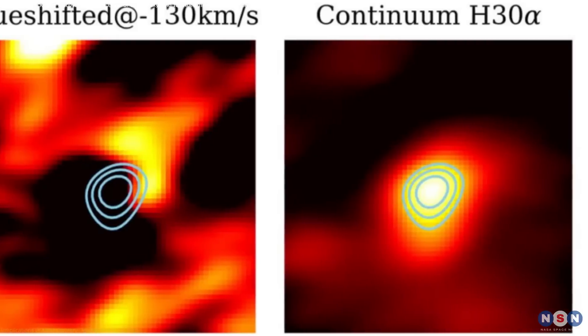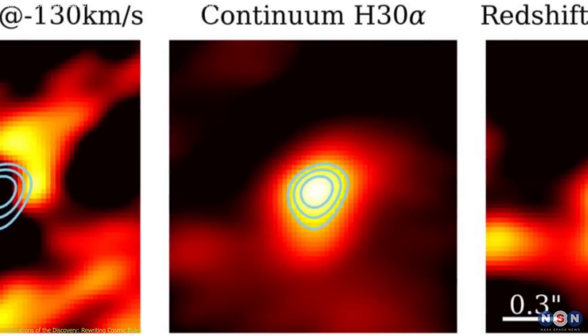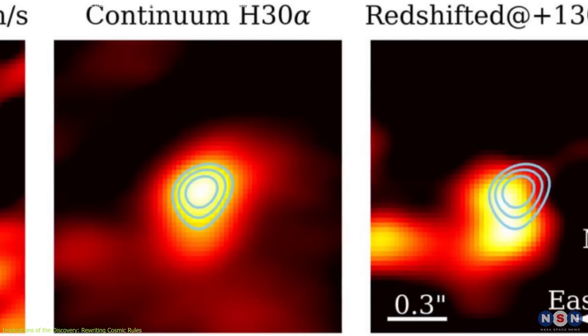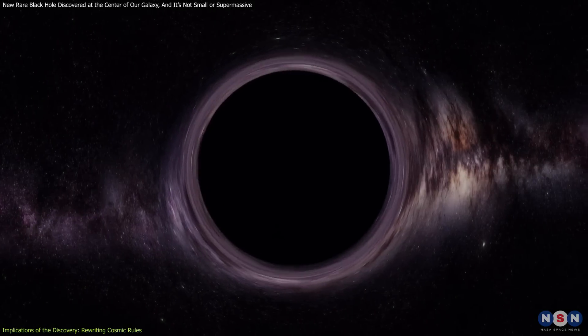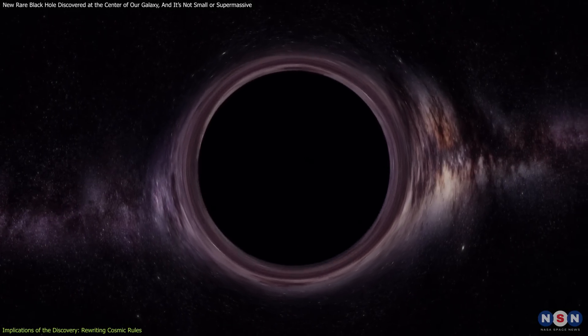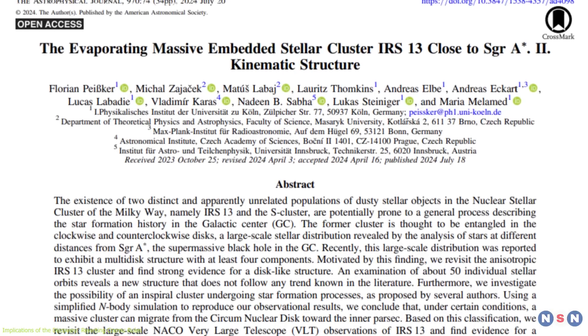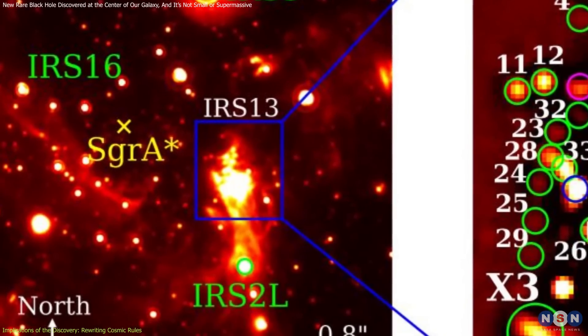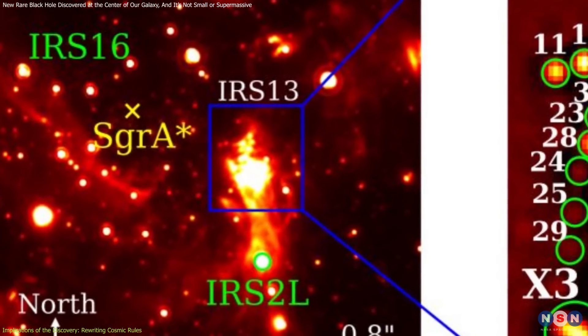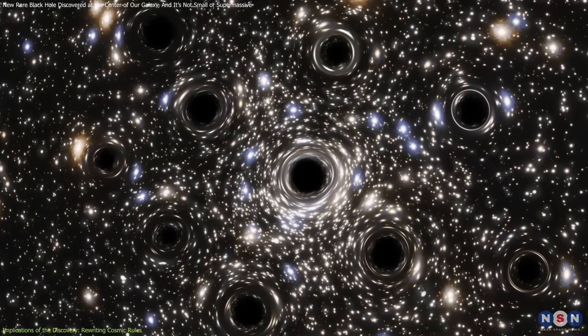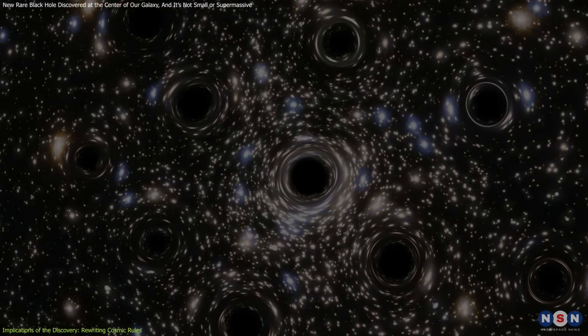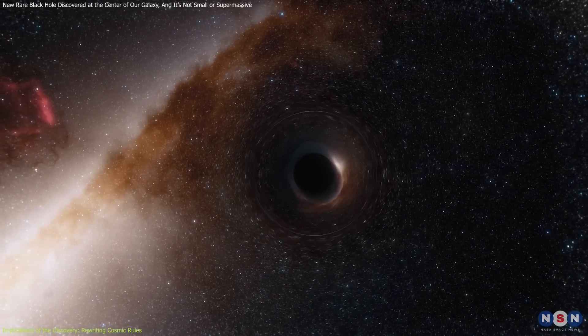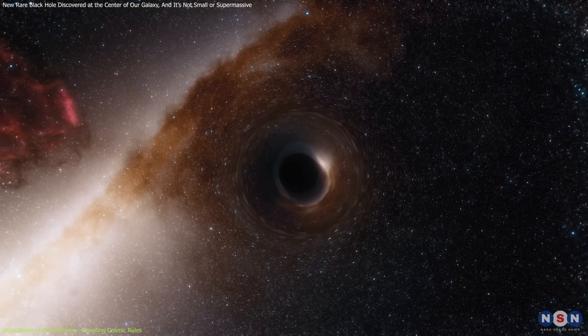With the intermediate-mass black hole within IRS-13 now brought into the light by our observational power, we stand at the threshold of new astronomical insights. This discovery is crucial for several reasons. First, the presence of this black hole challenges long-standing theories about the size and distribution of black holes in galaxies. The conventional understanding posits that black holes in galaxies typically come in two sizes.